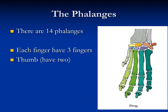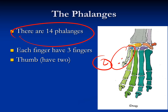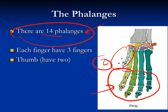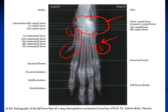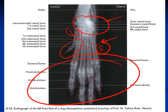In the phalanges, we have a total of 14 in humans. The first digit has only two phalanges — proximal and distal — while the others have three: proximal, middle, and distal phalanx. In pigs we have 12 phalanges because the first digit is absent. In the ox we have only 6 phalanges, because metacarpals one and two are absent and number five is rudimentary, leaving digits three and four each with proximal, middle, and distal phalanges.